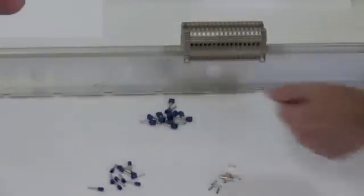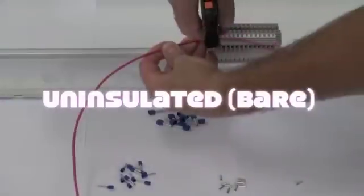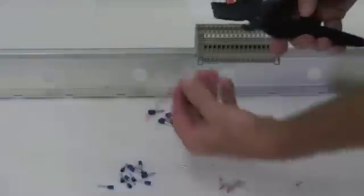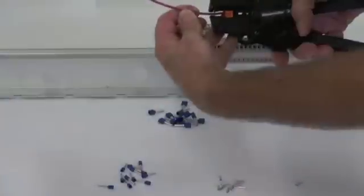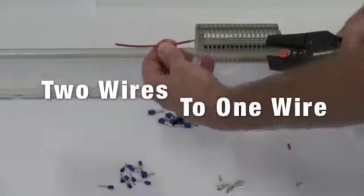Wire ferrules, or cord end terminals, are available in three common styles: uninsulated or bare, insulated, and dual wire or twin wire. These ferrules accept two wires and allow them to be crimped together into a single ferrule.